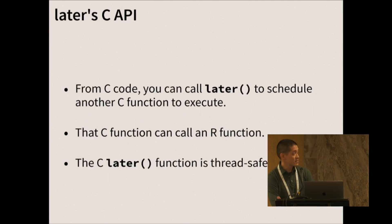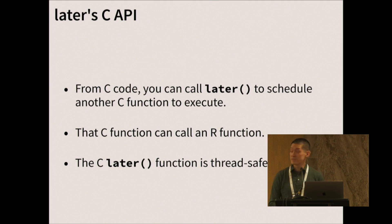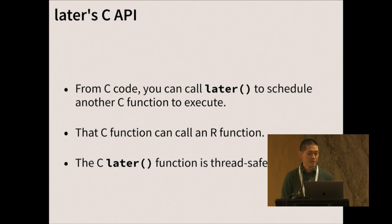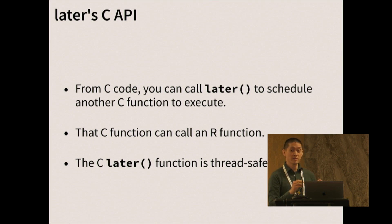Later also has a C API. This is important when you're doing asynchronous programming, because a lot of the time you have to interface with external libraries. From C code, you can call Later to schedule a C function to execute — there's a C function 'later.' That C function you've scheduled can in turn call an R function. Also very importantly, this later function is thread-safe, so you can have another thread schedule an R function to run.